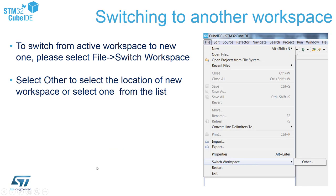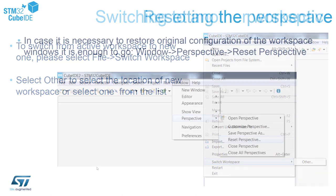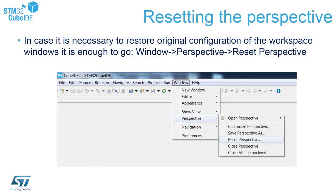Another convenient feature within STM32Cube IDE coming from Eclipse is switching workspaces. We can imagine working on several projects across several workspaces. To switch between them, go to File > Switch Workspace, and you will see a list of recently used workspaces plus the option 'Other', which allows you to select a different location for an already existing workspace.